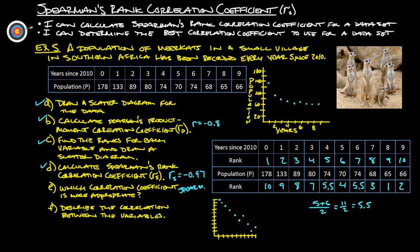And then describe the correlation between the variables. So the correlation between these variables is the population of meerkats started at 178, and it was kind of rapidly declining. And then it has actually kind of started to kind of stabilize at about 65 or so for their population. So it started off high, the population got lower and lower, and then it stabilized.